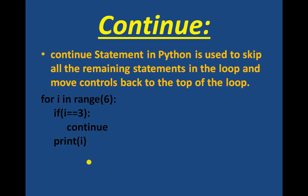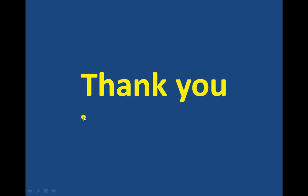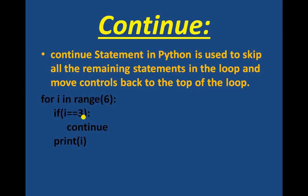Next is the continue statement. The continue statement in Python is used to skip all the remaining statements in the loop and move control back to the top of the loop. For example, when the value of i runs from 0 to 5 and i equals 3, it will just continue the loop without printing — so the value 3 will not get printed. The summary is now clear. Your homework is to revise the chapter; the next class will continue from here.